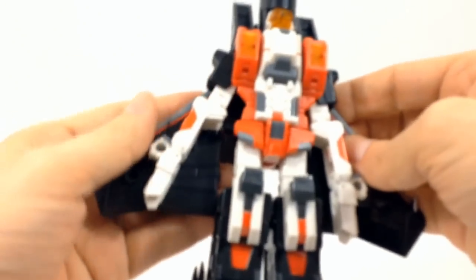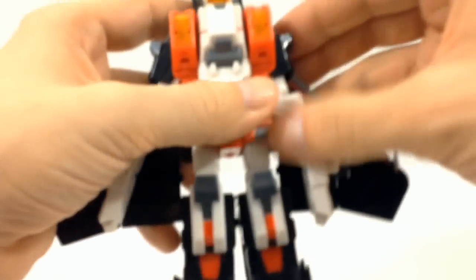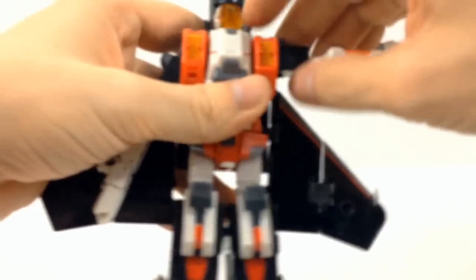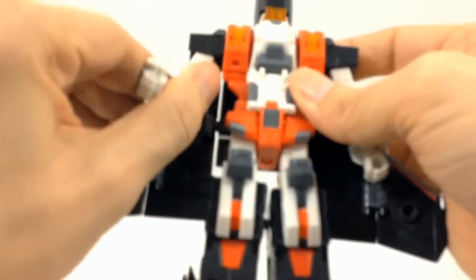Alright. Now that I have that done, go ahead and focus on the arms. Flip the intakes back a little bit. Lift the shoulders up. Flip around the arms. Lower them down. Do the same for the other side.